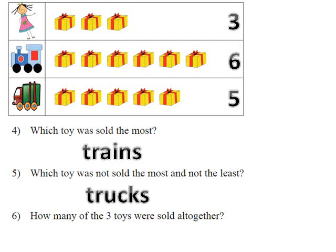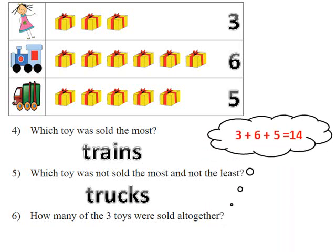How many of the three toys were sold altogether? Grade 2, what does 'altogether' mean? Altogether means I must count them all together. So in my head, I'm going to say 3 plus 6 plus 5 equals 14. They sold 14 toys altogether. Hope this helps. Have an awesome day!